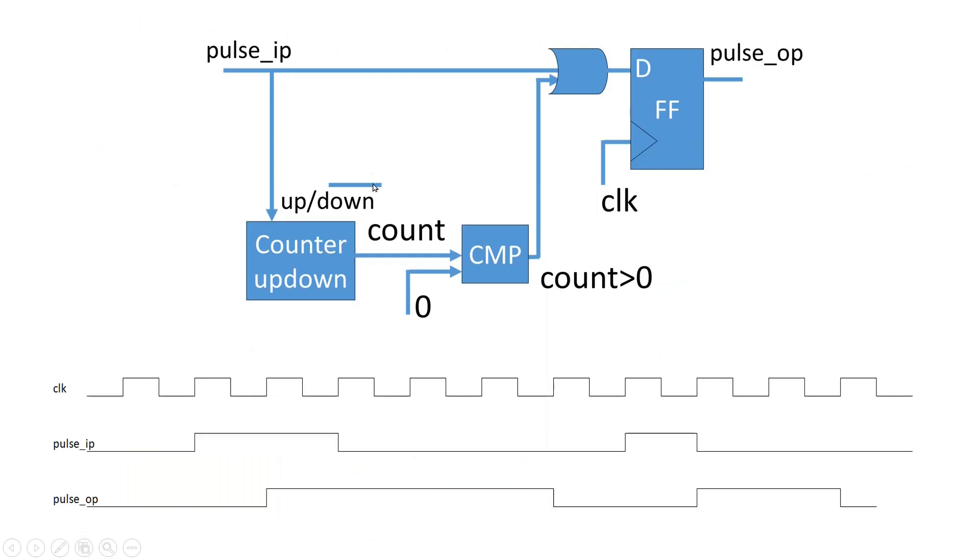Now let us see how we will achieve the desired functionality with the help of this logic diagram. Let us see this logic diagram and the waveforms together. So, when the pulse, first pulse appears at the pulse input, let us see how this logic design behave. So, this will be directly applied to this OR gate and irrespective of the other input, this will reach at the input of D flip-flop and we will get the pulse output.